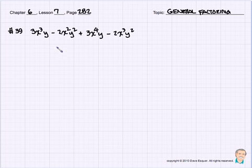Let's try number 39. Ah, this one has four terms, and I bet we should probably do something by grouping. Remember, less than 7 is kind of a collection of everything.